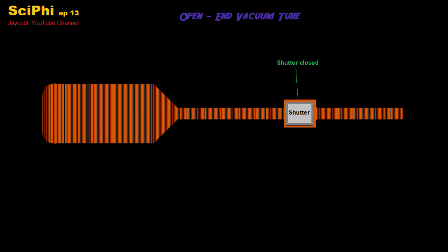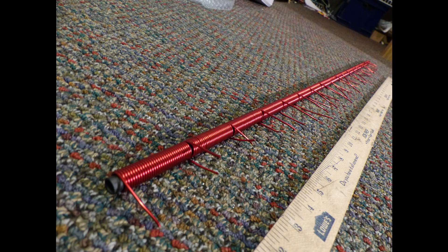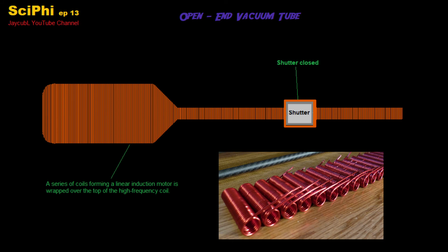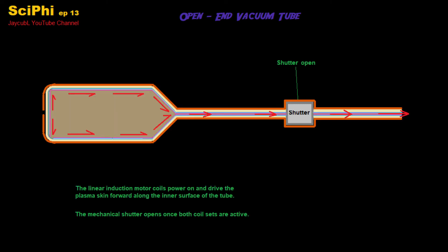The next layer of coil wound over that is a series of short concentric wound coils forming a linear induction motor. The linear induction motor is also driven with high frequency polyphase AC, and this drives the conductive gas formed by the first set of coils forward and down the tube out of the device.